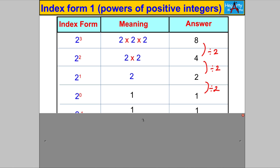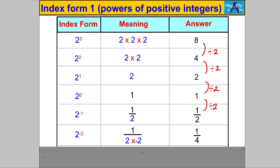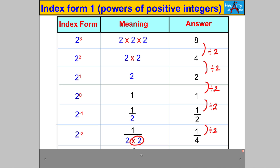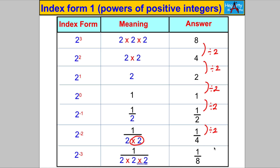Here's where it gets tricky. The next one is 2 to the power of negative 1, and because we're dividing by 2 each time, 1 divided by 2 is one half. Then 2 to the negative 2 — you're going to divide by an extra 2, so you get a quarter. And 2 to the negative 3 will have three 2s multiplying on the denominator, giving an eighth.